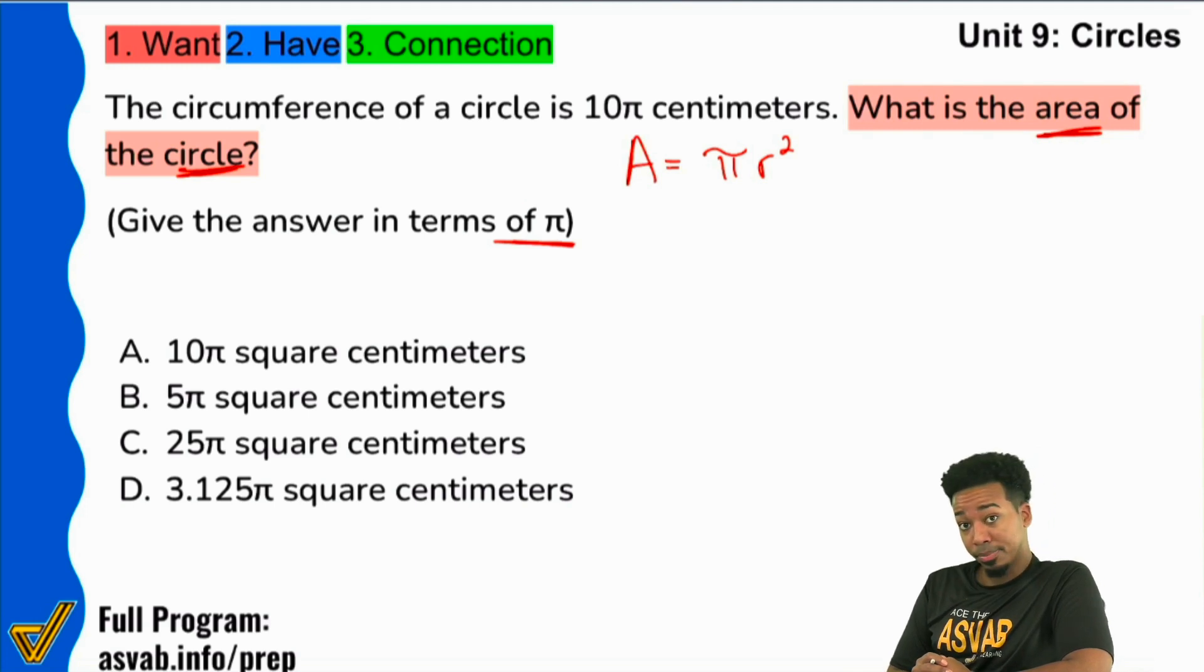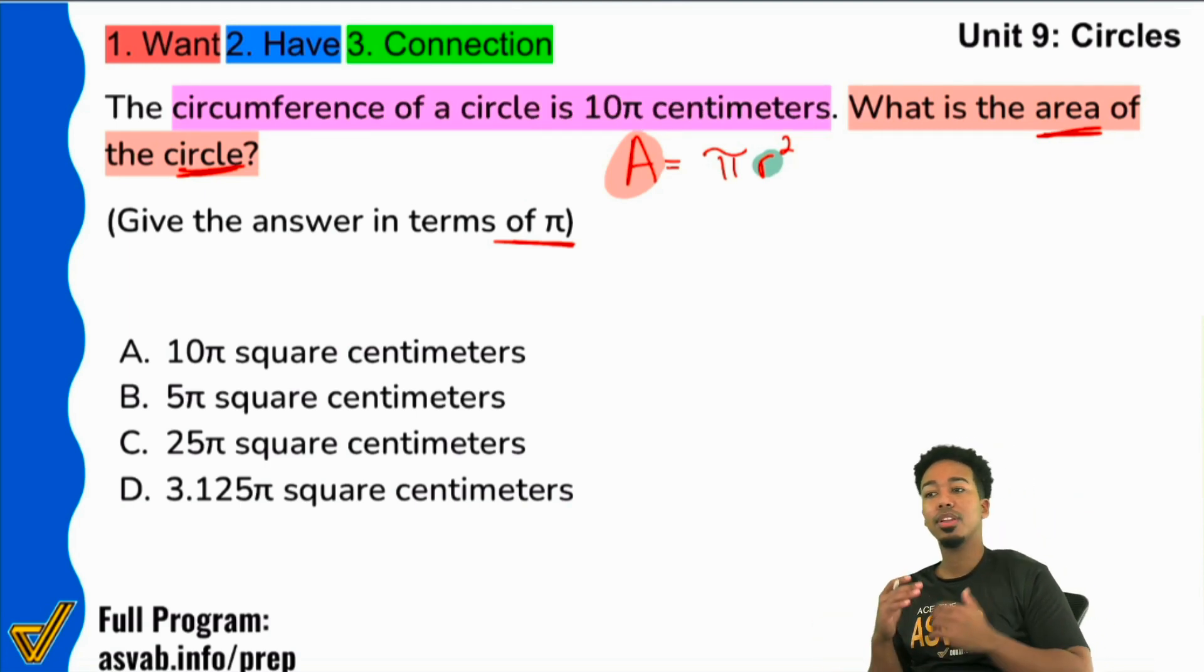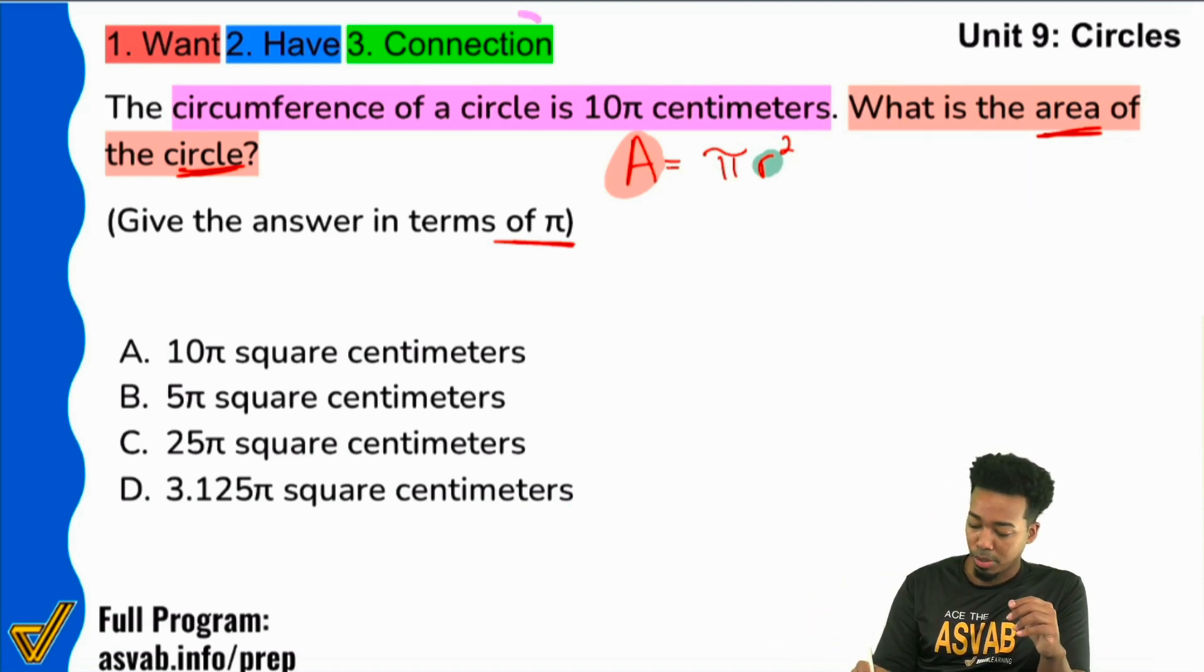So what makes this problem hard? Well, here's the thing. If we want to find the area, we need the radius. That's a fairly straightforward and pretty reasonable point to make, right? Yeah, we just need the radius. We plug that into the formula and we're done. But the problem is that the problem doesn't give you the radius. Look at what it gives you. The problem gives you the circumference. So this is where a lot of people get stuck and a lot of people give up.